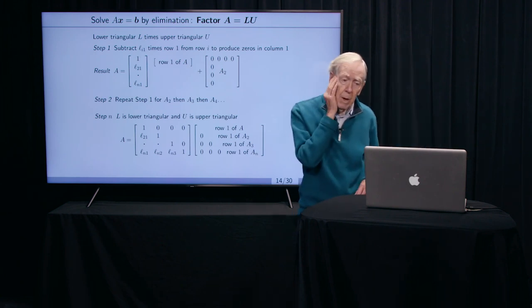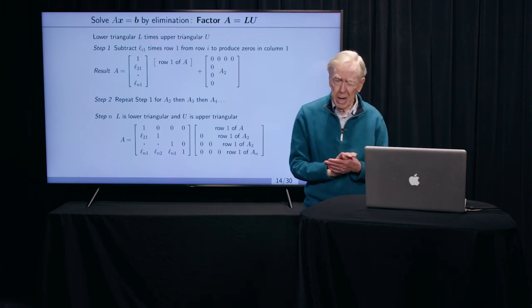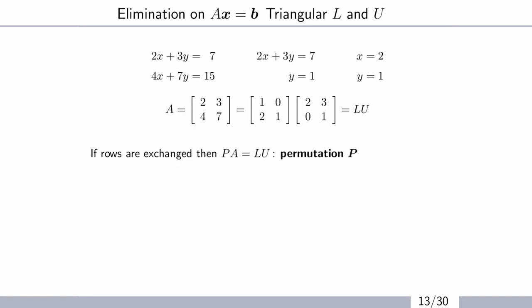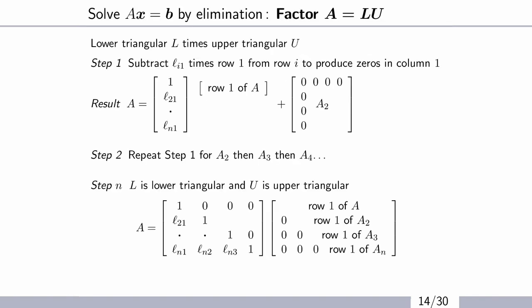And now we only were doing a 2 by 2 matrix. You remember our little matrix was pathetic, 2, 3, 4, 7. That was our matrix A. We can't stop there. So linear algebra goes on to matrix of any size. And this is the way to find the triangular factor L and the upper triangular factor U.